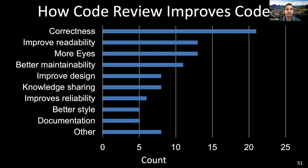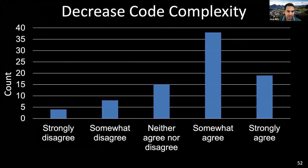The most popular reason regarding improving code was that code review helped with correctness. As one respondent said: if you have written the code yourself, it is hard to see the assumptions you have made — others can spot this and ask you to clarify and spot your mistakes. Code review also improves readability by making the code base more uniform. Having more eyes look at the code is beneficial because a second pair of eyes often catches issues the code author missed. Most participants also agreed that code review helps decrease code complexity — for example, by solving problems using cleaner strategies, but it may increase complexity in the near term by forcing the handling of corner cases that would not otherwise be discovered until later.